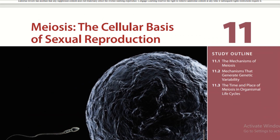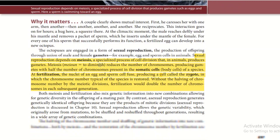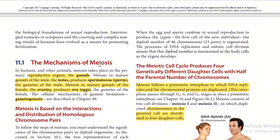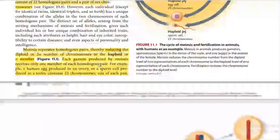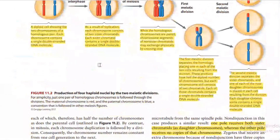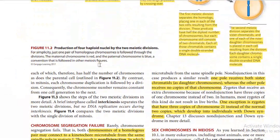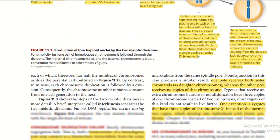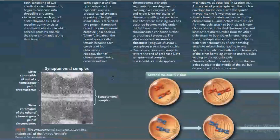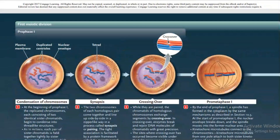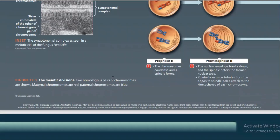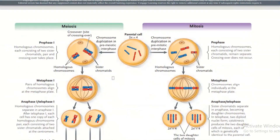There are no separate notes for this unit, as all points were covered in the last unit for meiosis as well. For revision, refer to figure 11.2 and the highlighted pages in blue. Remember all the steps involved in meiosis.